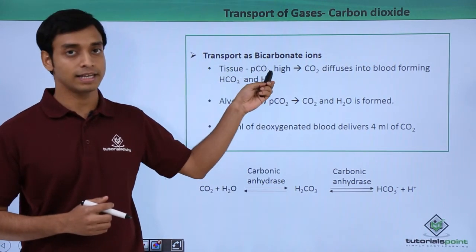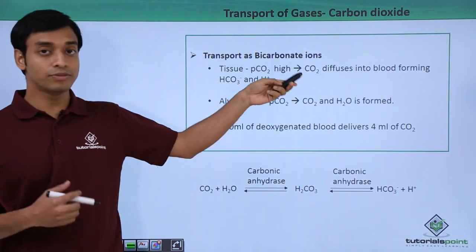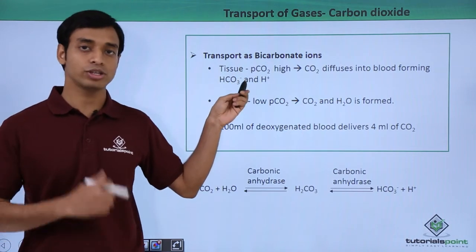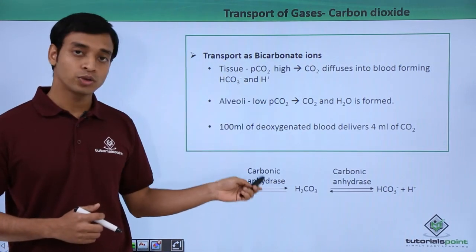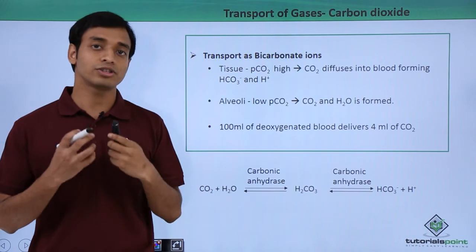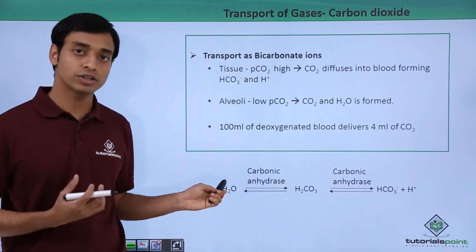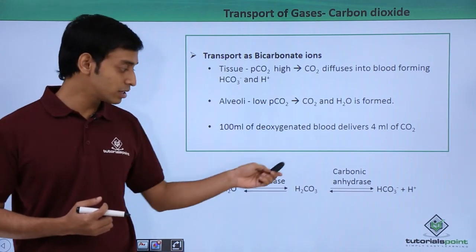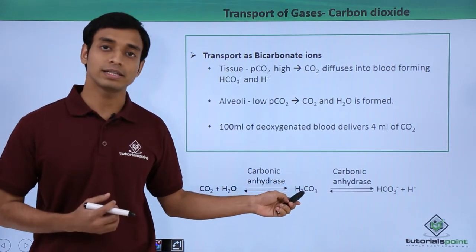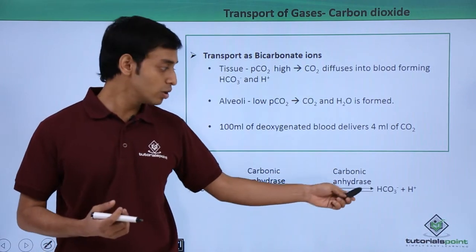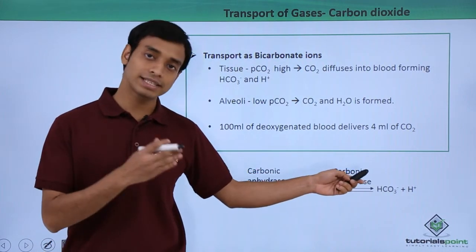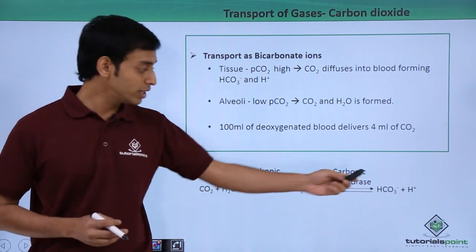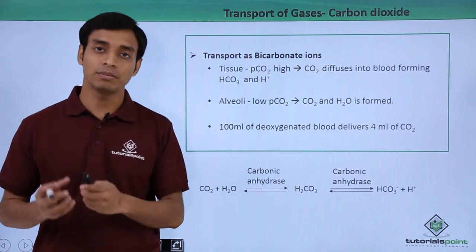At the tissue level, the partial pressure of carbon dioxide is high, so carbon dioxide diffuses into the blood. Carbonic anhydrase, along with water molecules, first converts carbon dioxide into carbonic acid (H₂CO₃). This carbonic acid then dissociates — again by carbonic anhydrase — into bicarbonate ions (HCO₃⁻) and hydrogen ions (H⁺), and in this form it is carried by the blood to the alveoli.